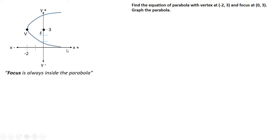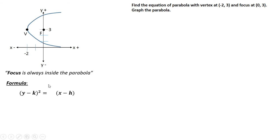Observe that our parabola passes through two points on the y-axis, so we're going to use the y-squared formula. Since it opens to the right, or opens to the positive x direction, our p is positive. This is the formula that we're going to use.